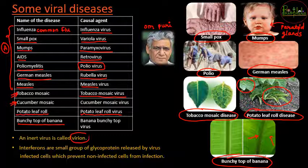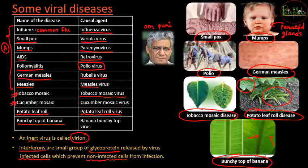Two important terms: first, virion is the term given to an inert virus - when the virus is not causing infection, it is said to be inert and is called a virion. Second, interferons are a group of glycoproteins released by virus-infected cells to send a signal to non-infected cells. They act as messengers giving a warning to prevent non-infected cells from infection.